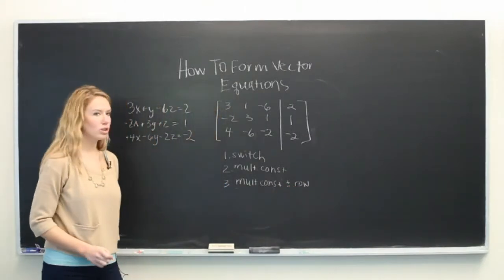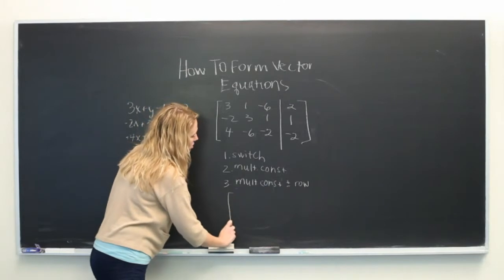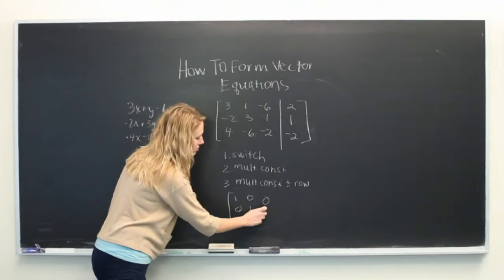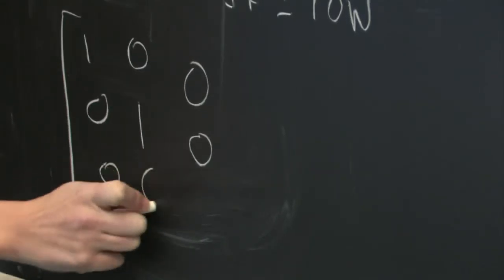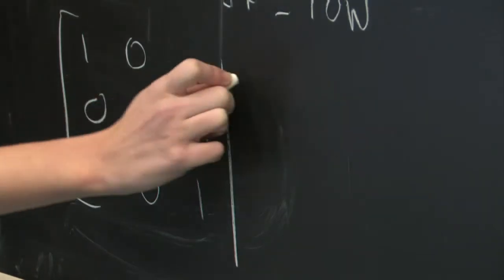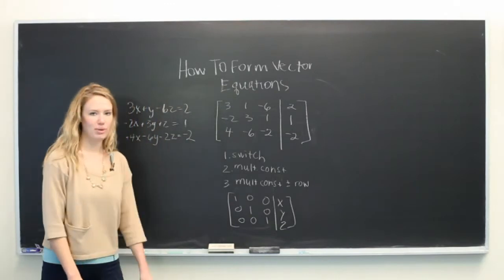So the goal of using these row operations is to end up with a matrix that has ones along the diagonal, also known as the identity matrix. And then your x, y, and z values will appear on the right.